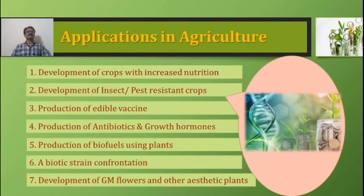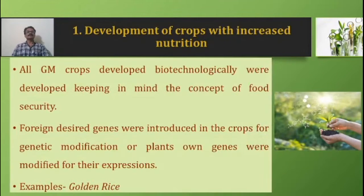The first application is development of crops with increased nutrition. All GM crops developed biotechnologically were developed keeping in mind food security. Foreign desired genes were introduced in crops for genetic modification, or the plants' own genes were modified for their expression. For example, golden rice — a variety of rice, Oryza sativa — is a genetically modified and biofortified crop. It has increased nutritional value in crop grains and is genetically modified to produce beta-carotene, which is not normally produced in rice. Beta-carotene is converted into vitamin A when metabolized by the human body, needed for healthier skin, immune system, and proper vision.